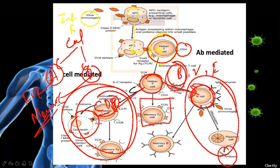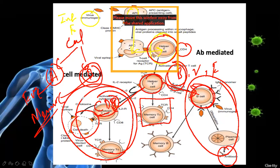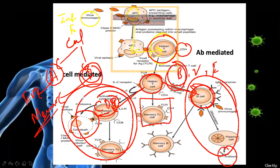That memory cell stays, and when the same bacteria comes again, there is no need to give a new signal — we already have memory inside the lymph node. If the same bacteria comes again, we have a memory cell against it. These cells can recognize: this enemy already entered this body before. So the second time, there is a very strong response. B cells also make memory cells, and T cells also make memory cells.